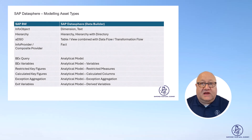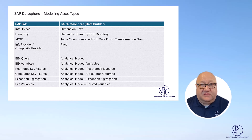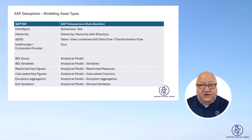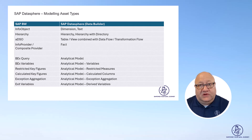Now, last but not least, as promised, a quick view on how these elements compare with good old BW objects. Your info object is basically like setting up a table and creating a dimension view or a text view for the member descriptions. Looking at the info provider or composite provider level, that's like setting up a fact view with all the associations to the dimensions. Your BEx query would be similar to the analytical model, with variables, restricted key figures, and calculated key figures.